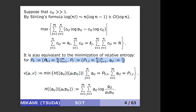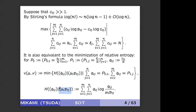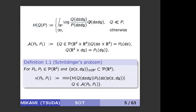Setting p_0, p_1 by this equation, and letting q_ij denote c_ij over N, this maximization program becomes a minimization program, where H is the relative entropy of q_ij with respect to mu_i p_ij. Making this problem more general, I call this the Schrödinger problem. I define the relative entropy of q with respect to p, where q and p are probability measures on R^d times R^d.